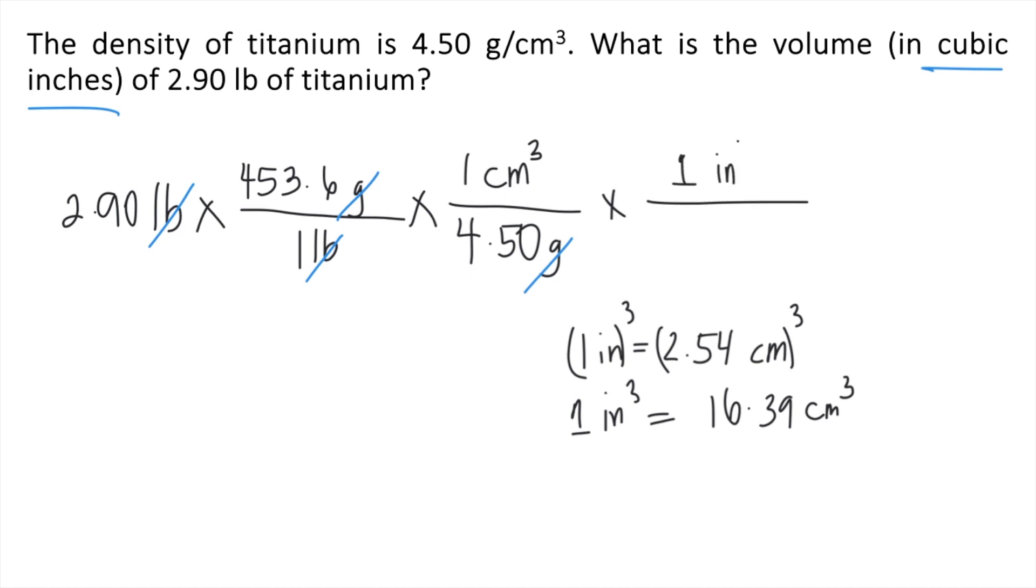1 cubic inch over 16.39 cubic centimeters. So that the cubic centimeters would cancel out and finally your unit is in cubic inches.